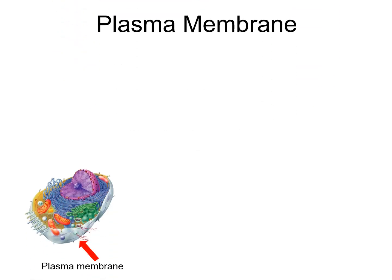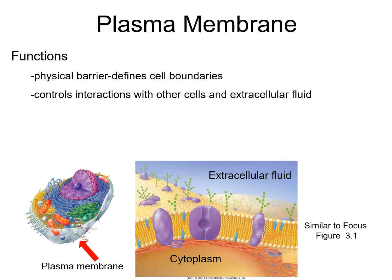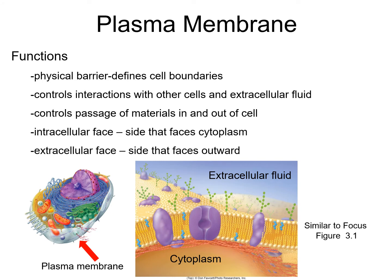Let's look at the functions of the plasma membrane. The plasma membrane separates the cytoplasm from the extracellular fluid, serving as a physical barrier between what is extracellular and what is intracellular. The plasma membrane controls the interactions of one cell with the extracellular fluid. It is selectively permeable — it allows some substances to cross easily and others not so much, picking and choosing what crosses at any given time.